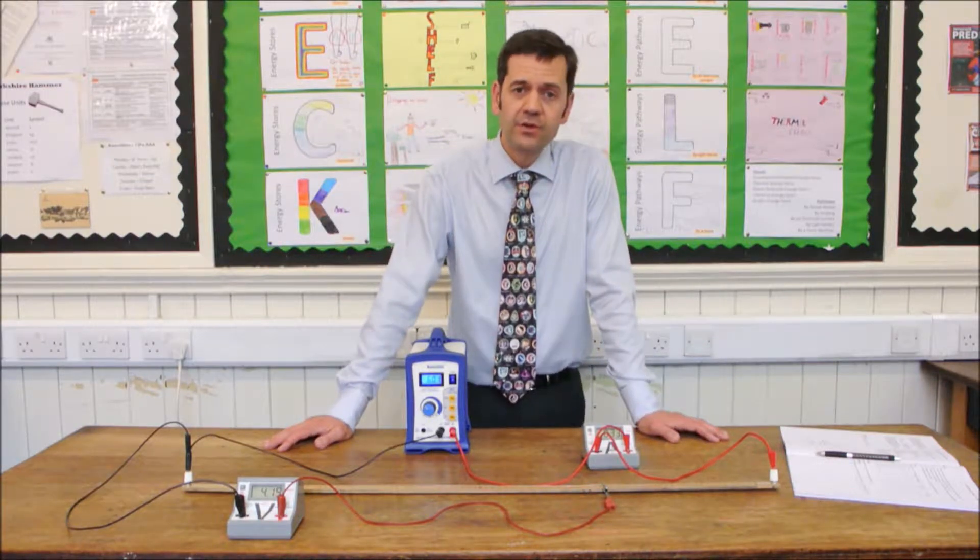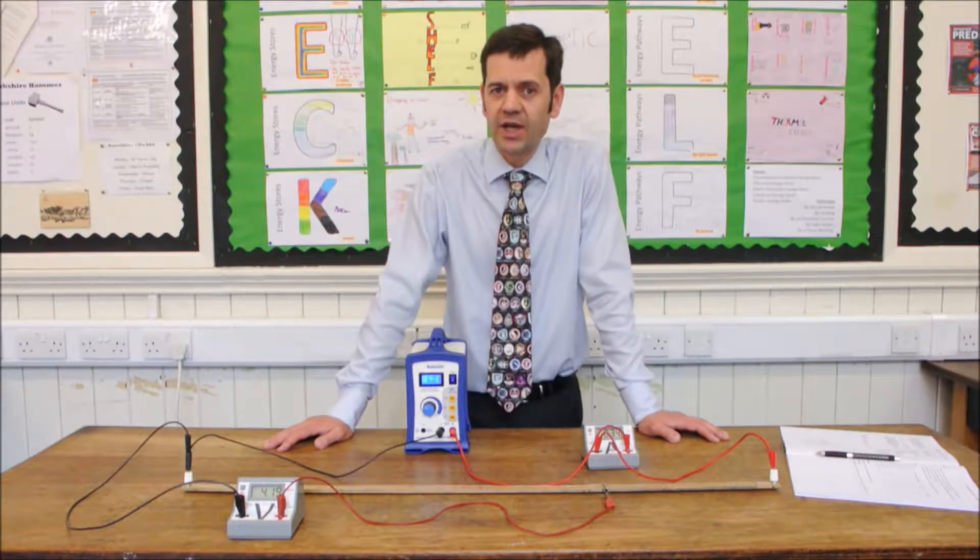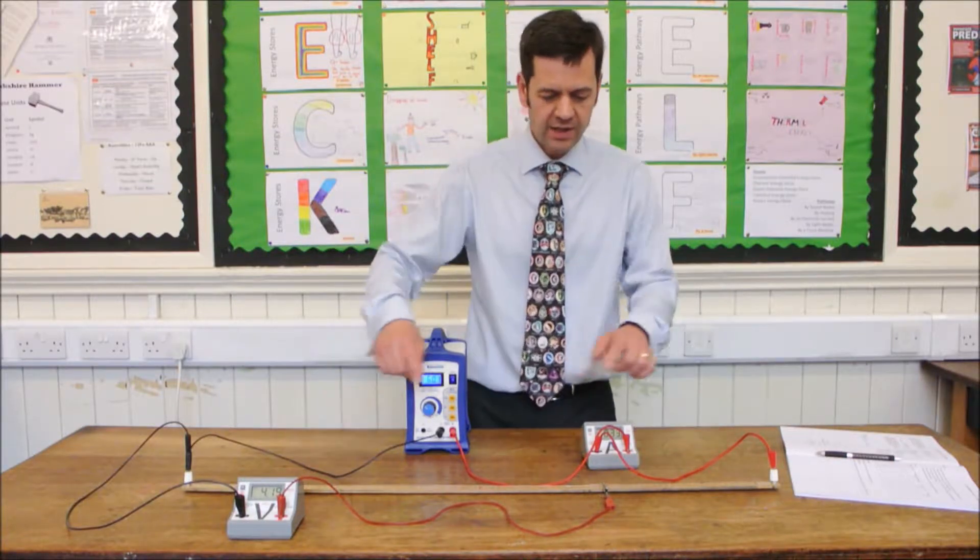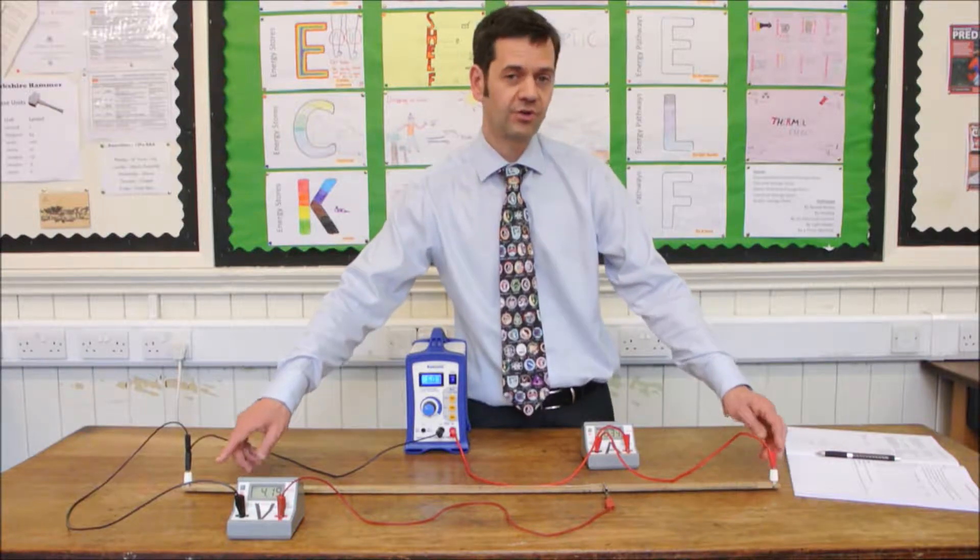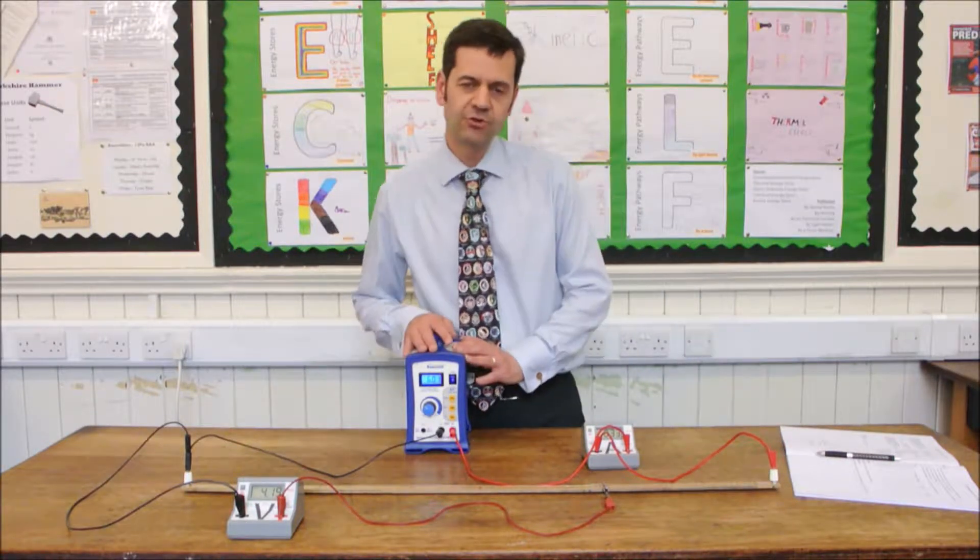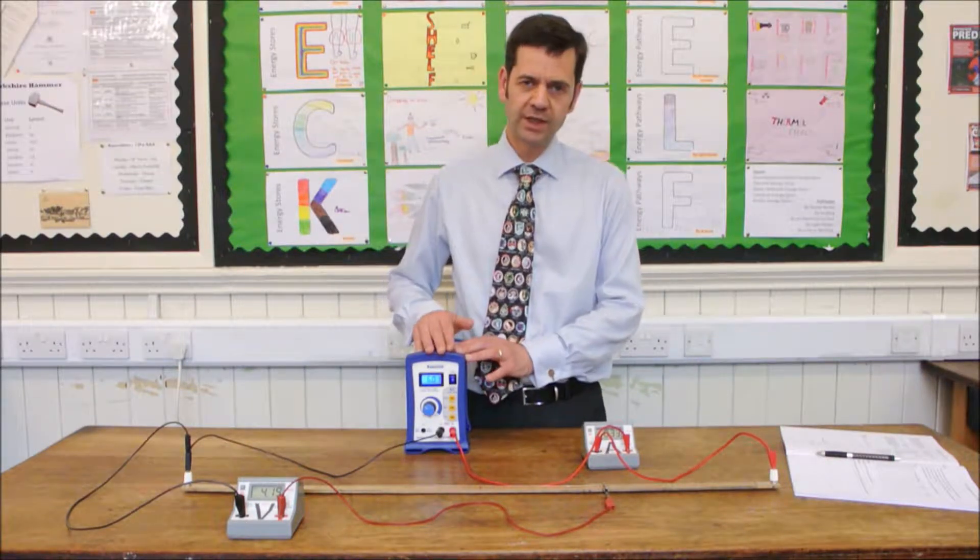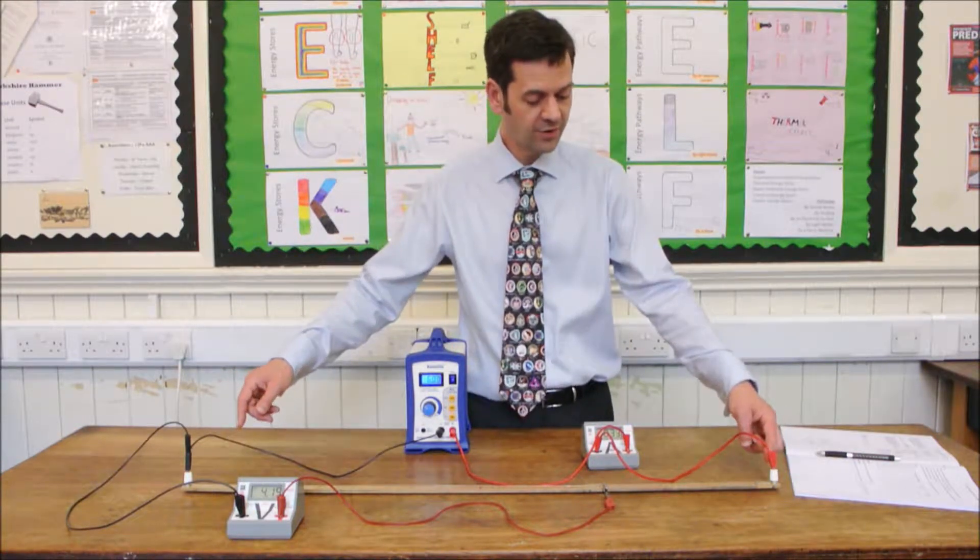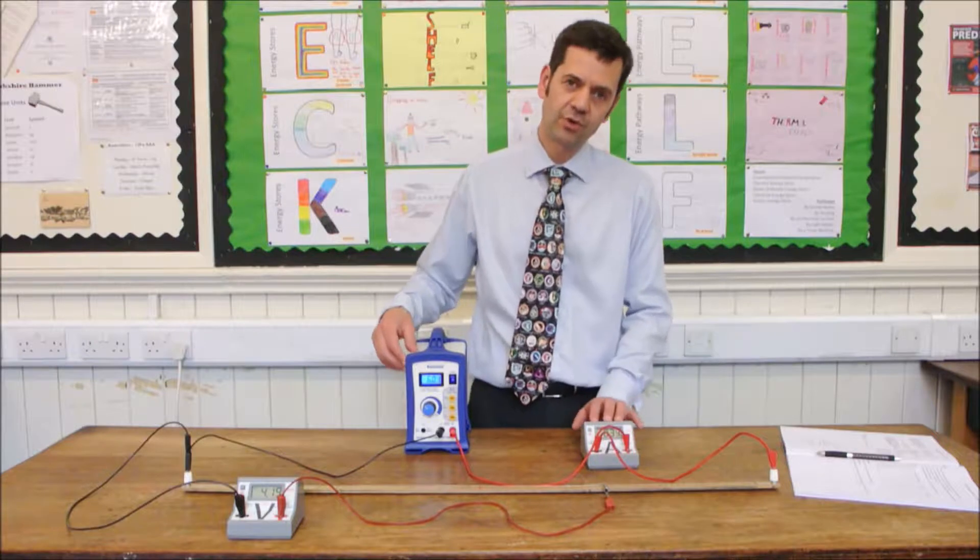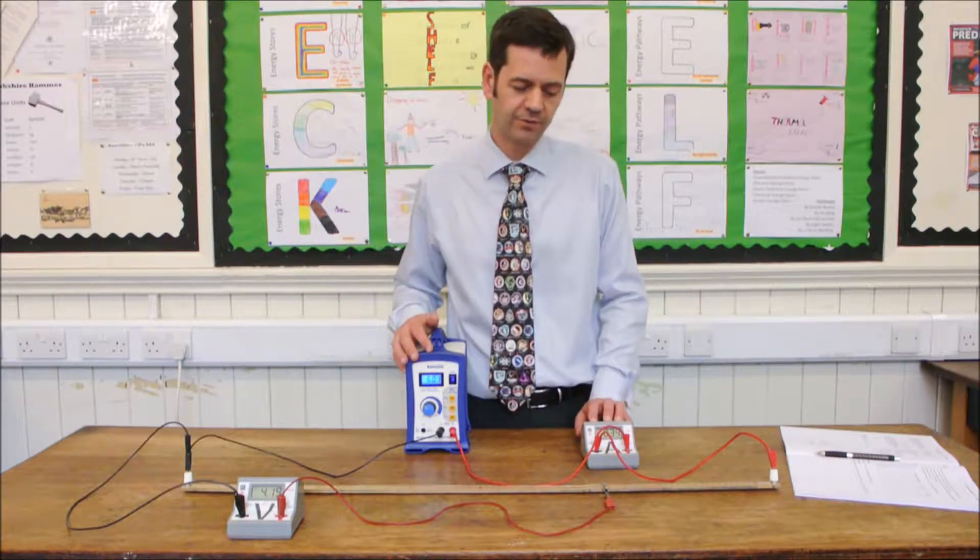The first thing you need to do is set up the circuit as shown in your lab book. Here we have the length of wire which is fixed to a ruler so that we can measure its length, and we have a potential difference supplied by the power supply of 6V applied across the wire itself, and in series with an ammeter so we can measure the current flowing through it.